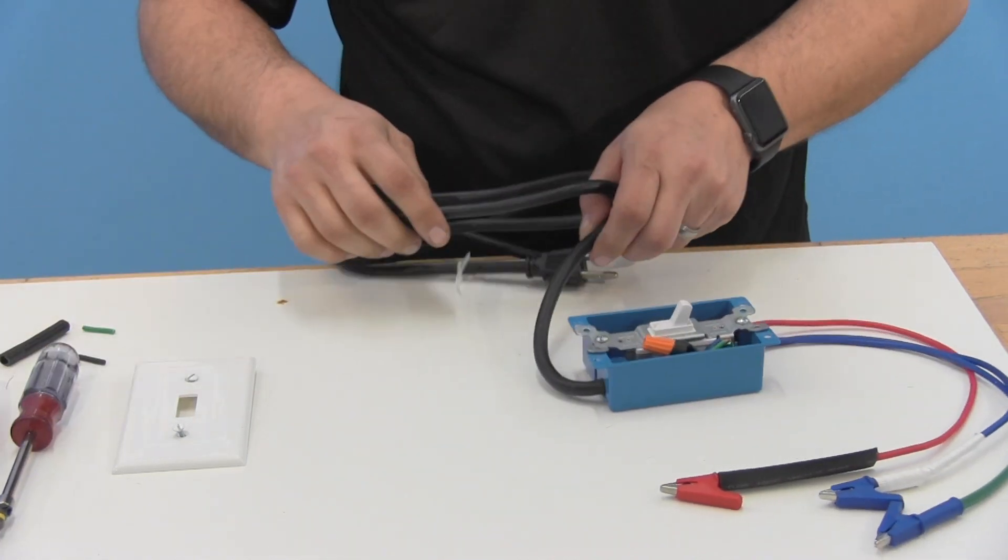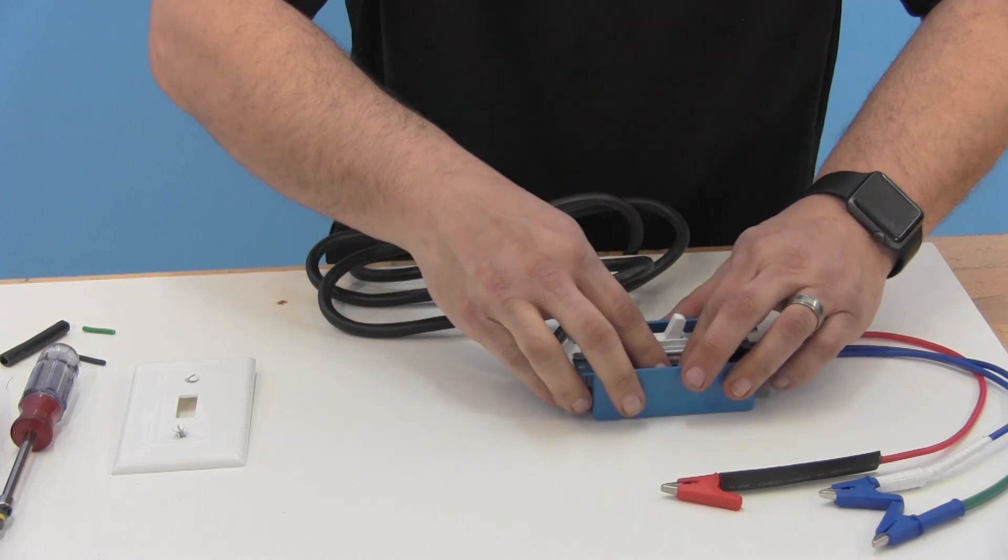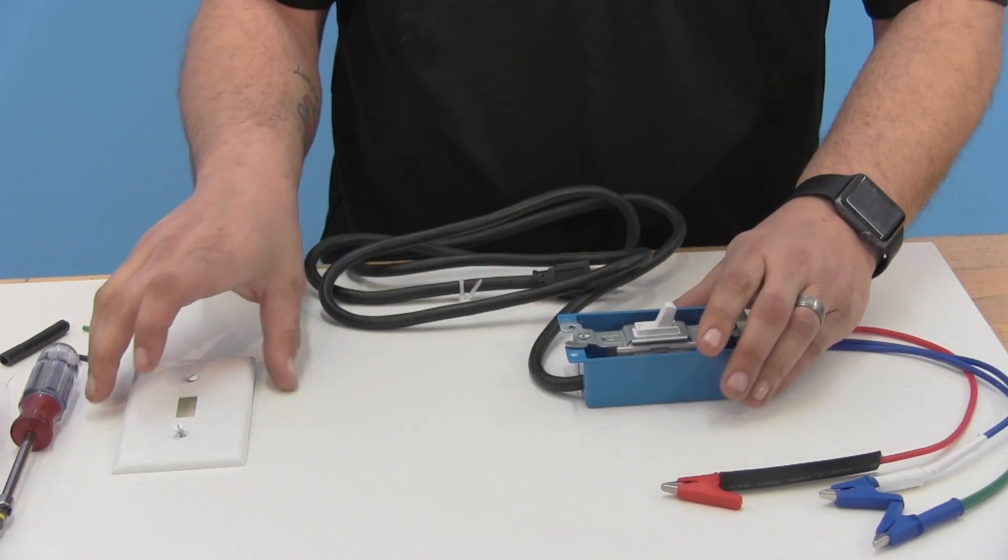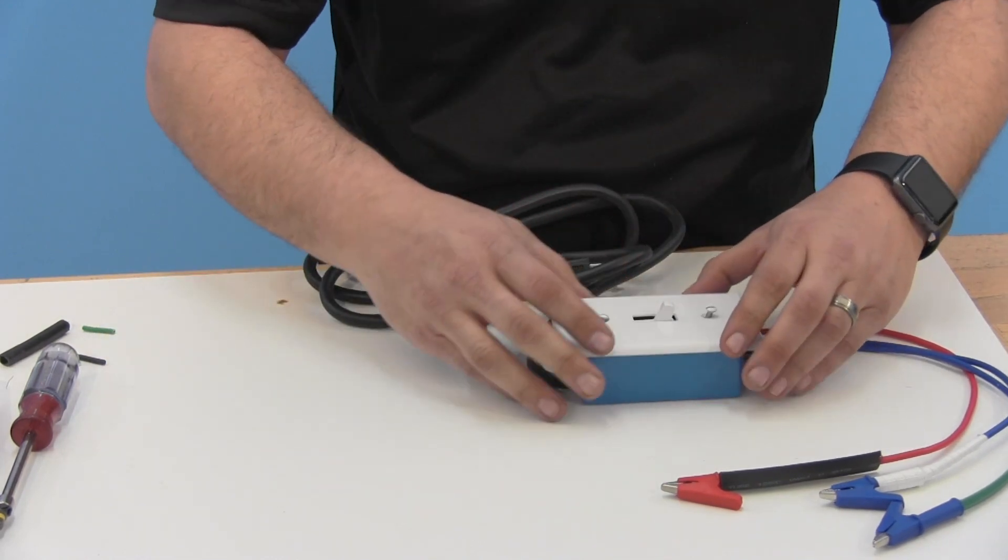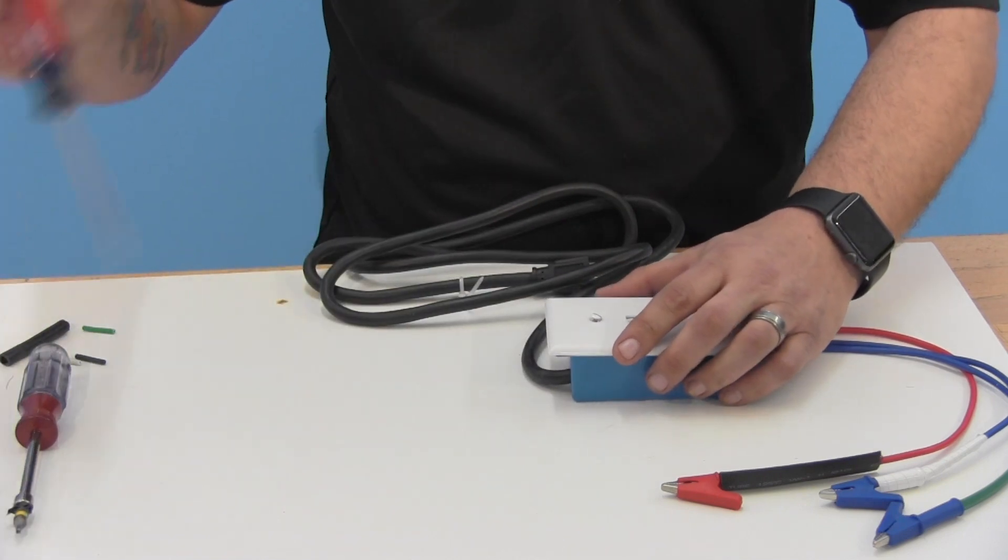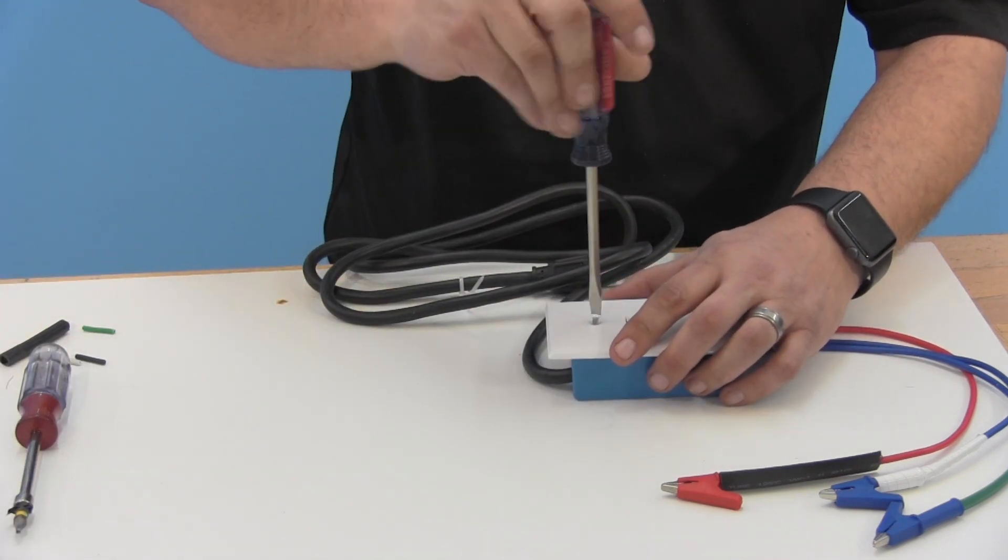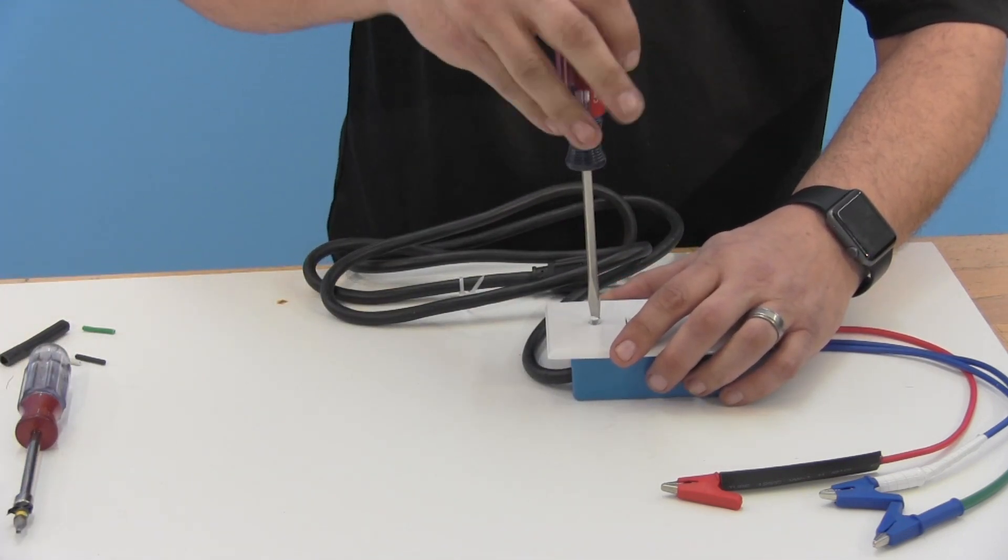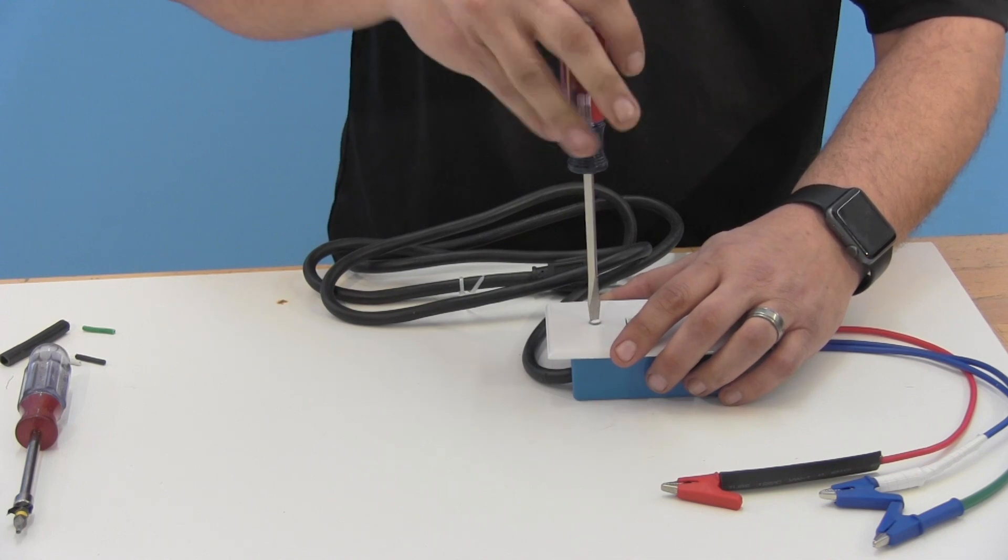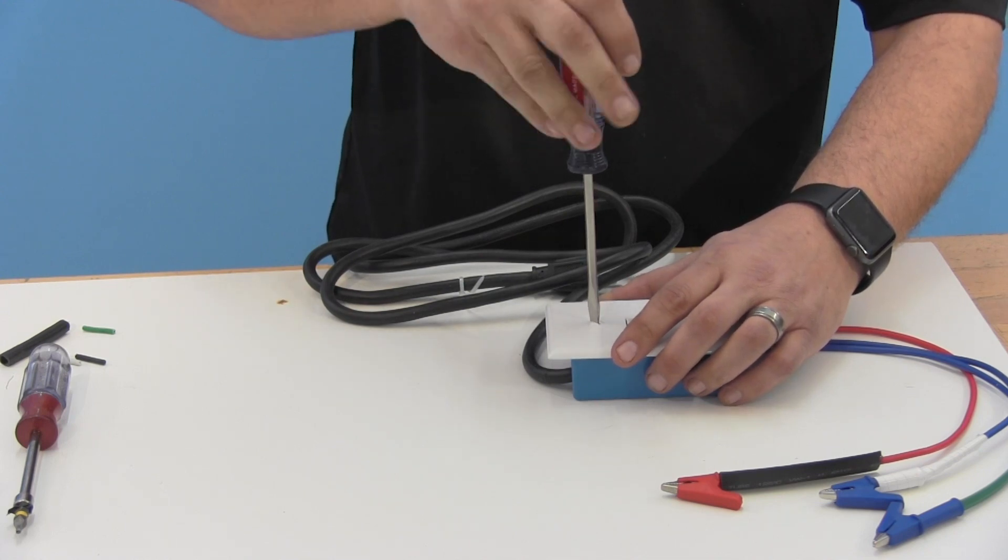Okay, we have our switch that's now tight inside that box there. Go ahead and place that wire nut down, get your switch cover. Use your flat blade screwdriver here, and you're going to screw that right into the switch. There's two holes on the switch for that.